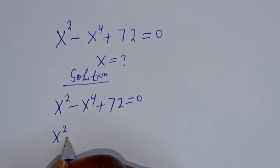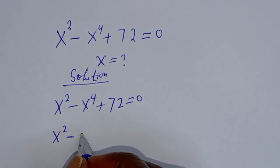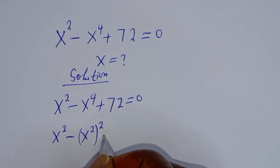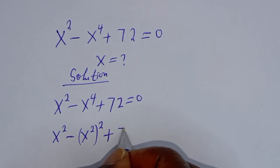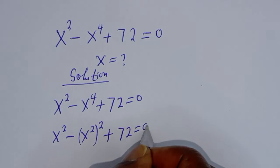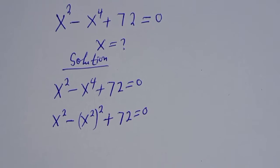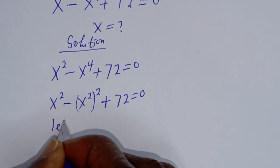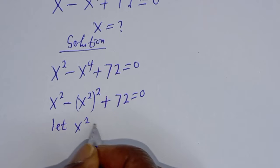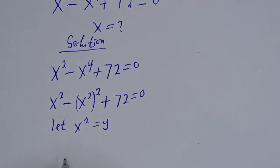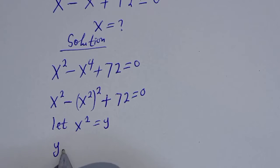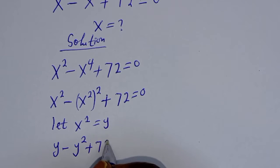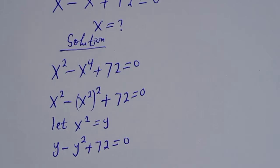So, x squared minus x raised to power 4 can be written as x squared times (x squared) plus 72 is equal to 0. Then from here, let x squared be equal to y. So y minus y squared plus 72 is equal to 0.